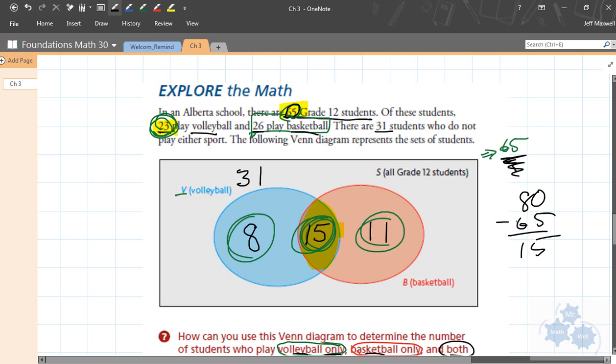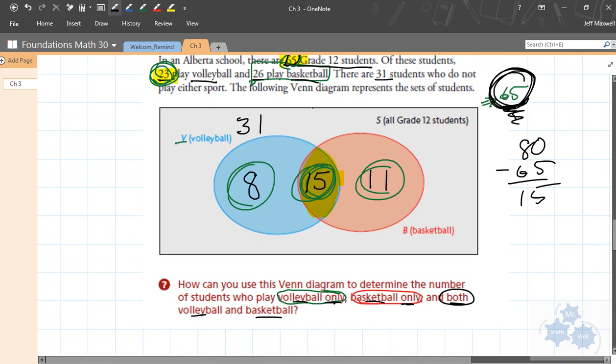So now let's add up what we've got here. 31 and 8 is 39, and 11 is 50, and 15 is 65. So now that we've labeled this diagram correctly and put the numbers in the right spots, now I can answer these questions. Who plays volleyball only? That's this section right here, and that is 8. 8 people play volleyball only. 11 people play basketball only, and there are 15 that play both.